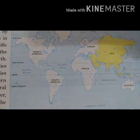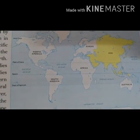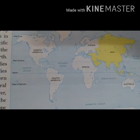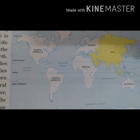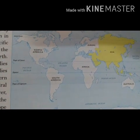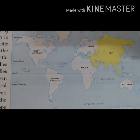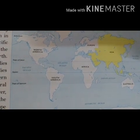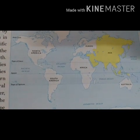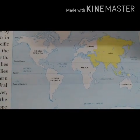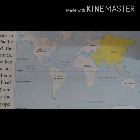Both Europe and Asia lie on the same landmass, together forming Eurasia. However, the boundary between Europe and Asia is formed by the Ural Mountains, the Ural River, the Caspian Sea, the Caucasus Mountains, and the Black Sea.